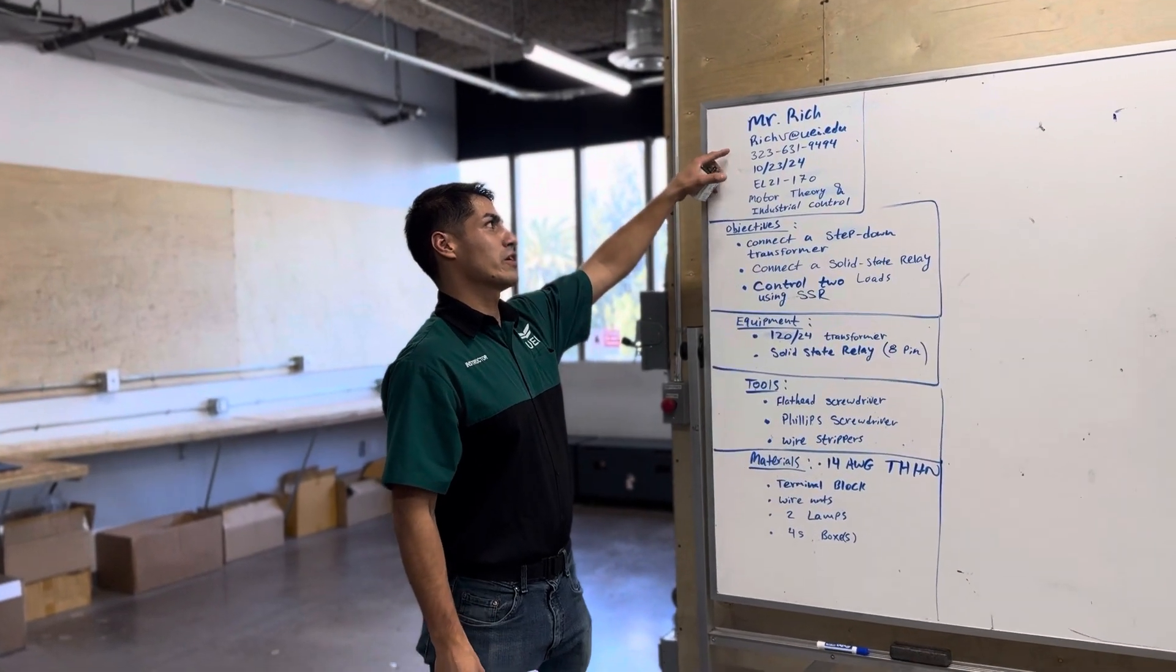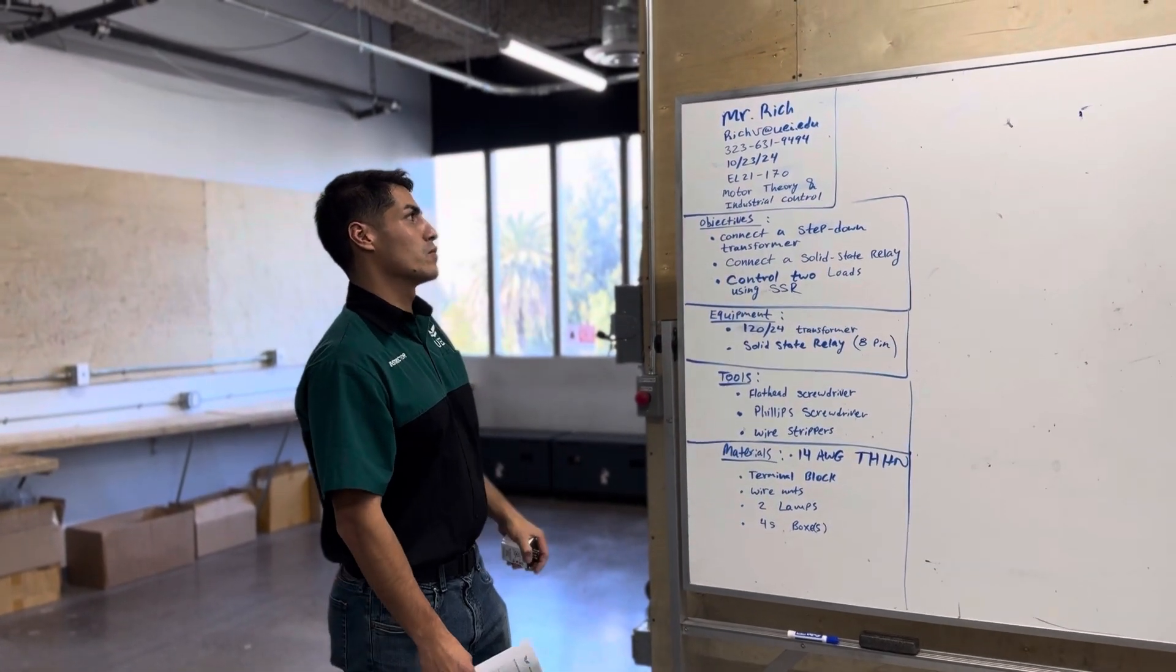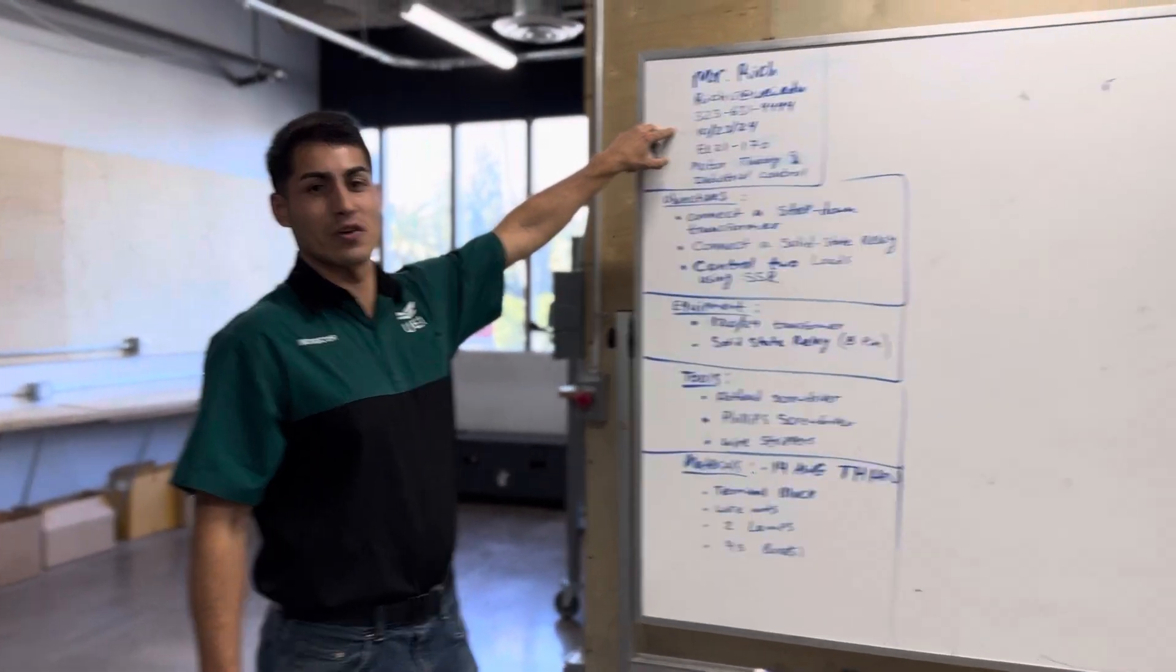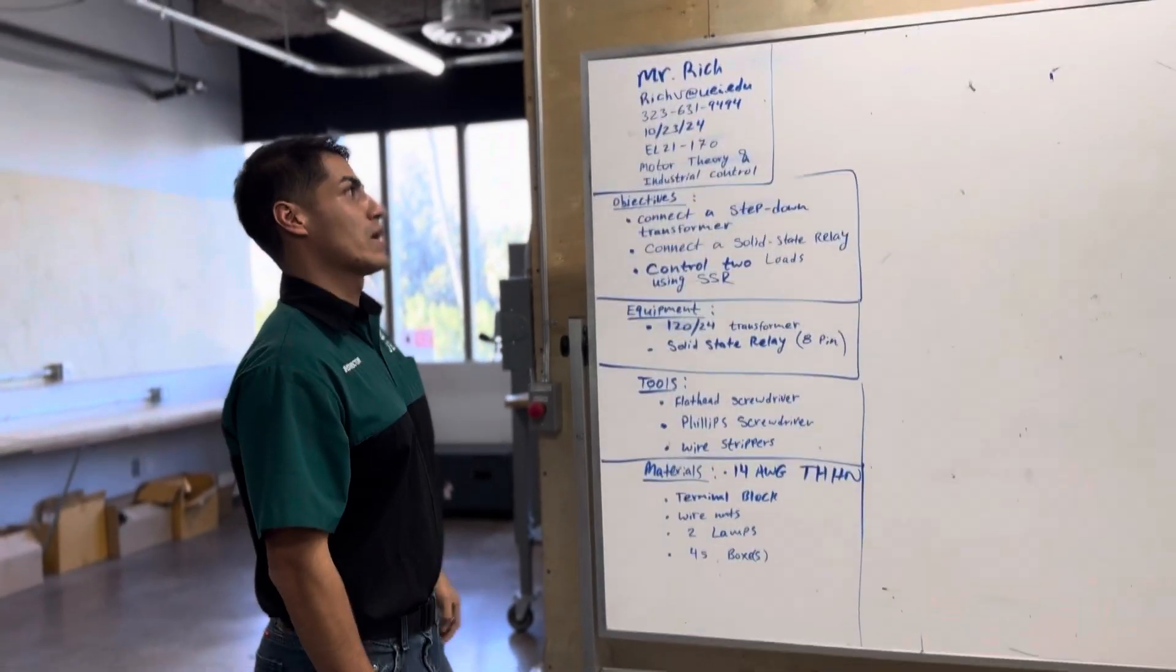Hey everybody, my name is Mr. Rich. Here's my email, richv.uei.edu. Here's my phone number. You can reach me at 323-631-9494.